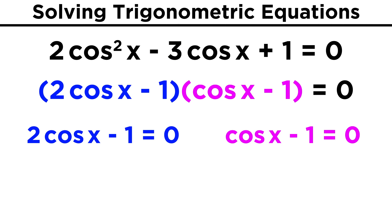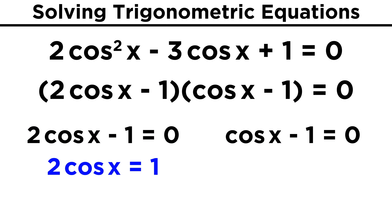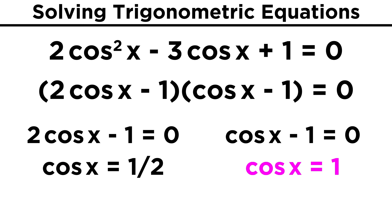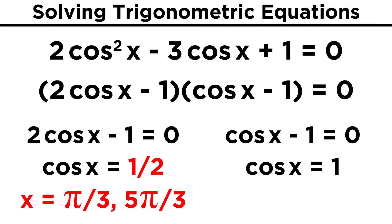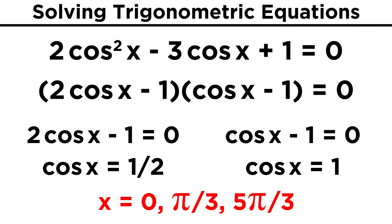Now as we know, each of these binomials can be set equal to zero, giving us two cosine x equals one, or cosine x equals one half, and then cosine x equals one. Well, where does cosine equal one half? That would be at one third pi and five thirds pi. Where does cosine equal one? At zero. So the solutions are zero, one third pi, and five thirds pi.